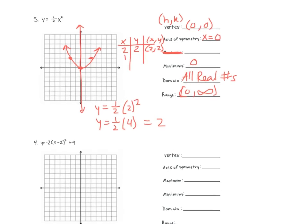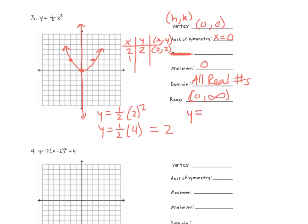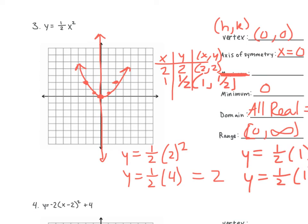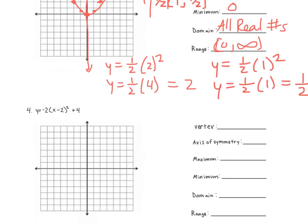Let's see what happens when we plug in 1: y is equal to one half times 1 squared. 1 squared is 1, and one half times 1 is one half. So when we plug in 1, we get one half — our point would be 1 comma one half. You don't always have to plug in one; we plugged in 2 the first time and didn't get a fraction. You have other options.